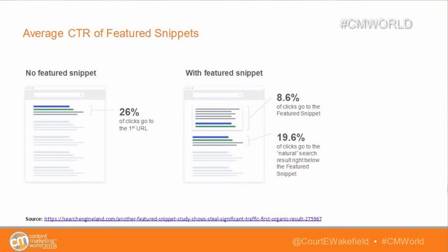That means there are 2.2 extra percentage points going to those first features on the search engine results page. If you think back to Children's Health on that 'why can't my kids sleep' search, we're getting 2.2 extra percentage points because we rank in both places. If you're not a math nerd, that's an 8.5% growth. How many of you would like to grow traffic on one of your pieces of content by 8.5%? Everybody likes that.